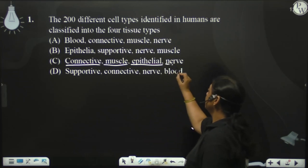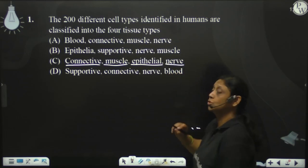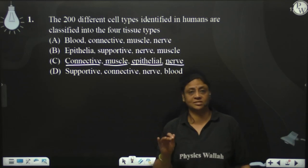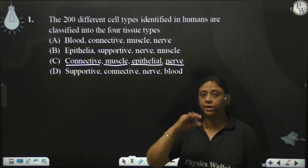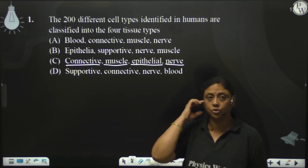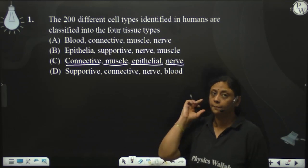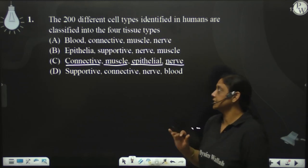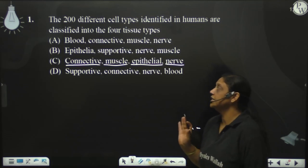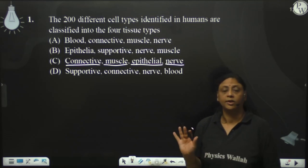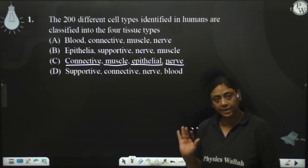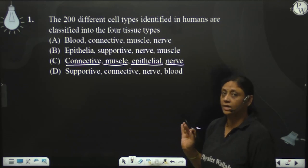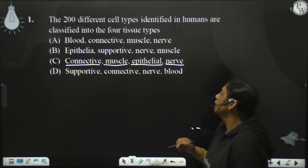Nerve tissues transmit the message or the signal from one part of the body to another part of the body. Is tarah se, humein char tarah ke main tissues padhne hain is animal tissues wale chapter ke andar.